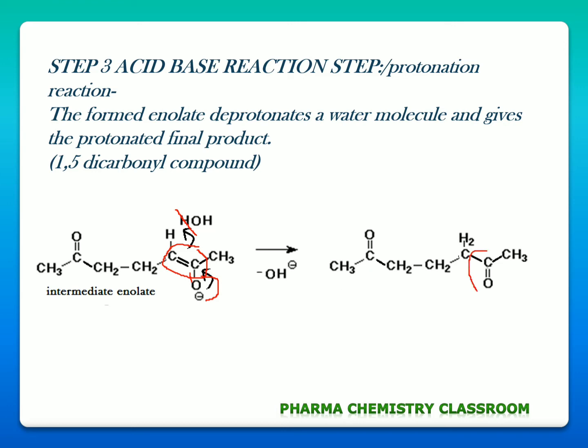This is a carbon-oxygen double bond or carbonyl bond formed due to the shifting of the negative charge on the oxygen, and this is the protonated carbon. So you understand what happened in this protonation step to get our final product, which is a 1,5-dicarbonyl compound.